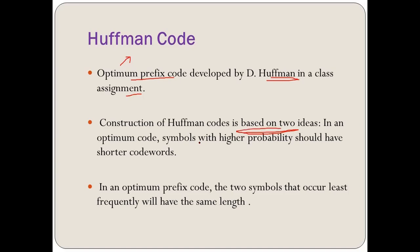In an optimum code, symbols with higher probability should have shorter codewords. The symbols which occur frequently should have shorter codewords, because if we keep the codeword length of those symbols larger, the complete code will be quite large. That is why we are interested in variable length codes versus fixed length codes — variable length codes are better.